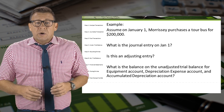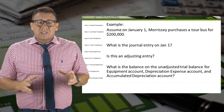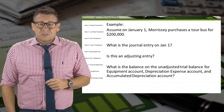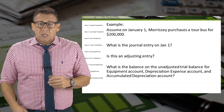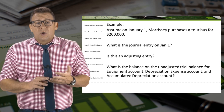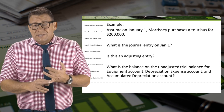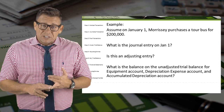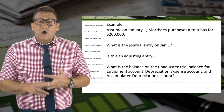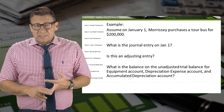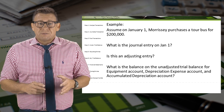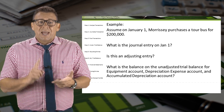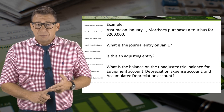Assume on January 1, Morrissey purchases a tour bus for $200,000. Let's answer the following questions: What is the journal entry on January 1? Is this an adjusting entry? And what are the balances on the unadjusted trial balance for equipment, depreciation expense, and accumulated depreciation?